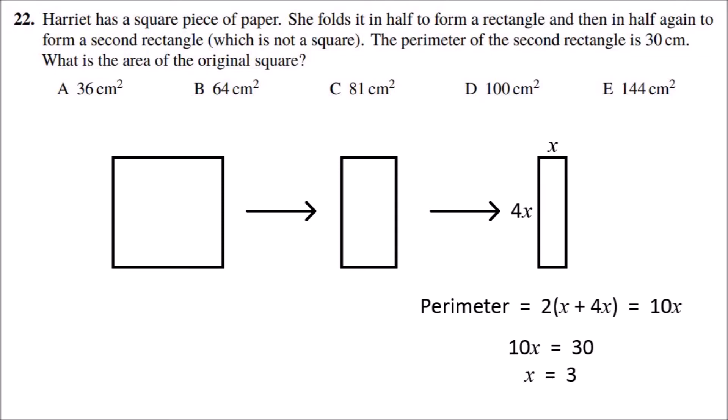The side length of the original square is the same as the larger side length of the rectangle, which is 4x. So the side length of the original square would be 4 times 3, which is 12, and so the area of the square would be 12 squared, or 12 times 12, which would be 144.